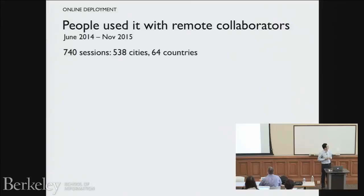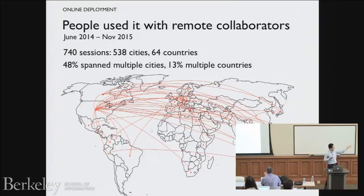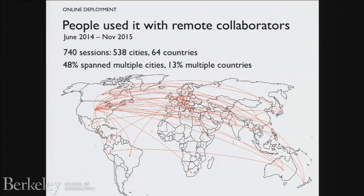What did the data show? People did use it with remote collaborators. Over 700 sessions were created in this time span — all real sessions, not spam. They spanned hundreds of cities and dozens of countries. Interestingly, half the sessions were multiple-city ones, where the IP addresses showed people lived in different places, and one in six involved different countries. This graph connects two countries if people from those countries joined a session together.